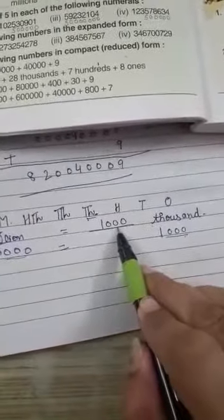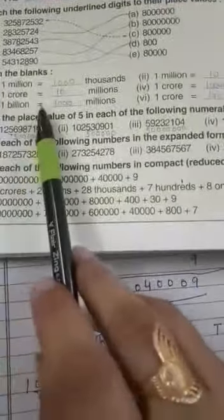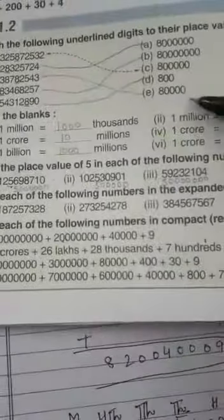Thousand thousands. Next is: one crore equals dash millions. Do all the filling in the blanks in your book.